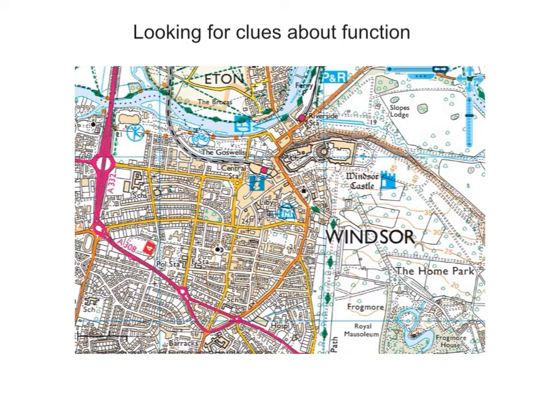Windsor also has two railway stations and we can assume — make a geographical guess — that Windsor perhaps is a commuter town. To the south of the map there is the word 'barracks.' This is a place of military importance, so we might assume that Windsor has a military function.